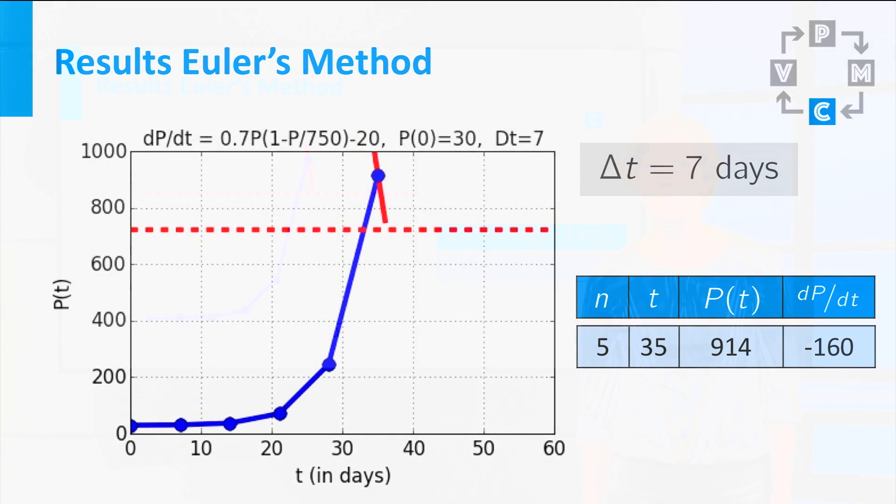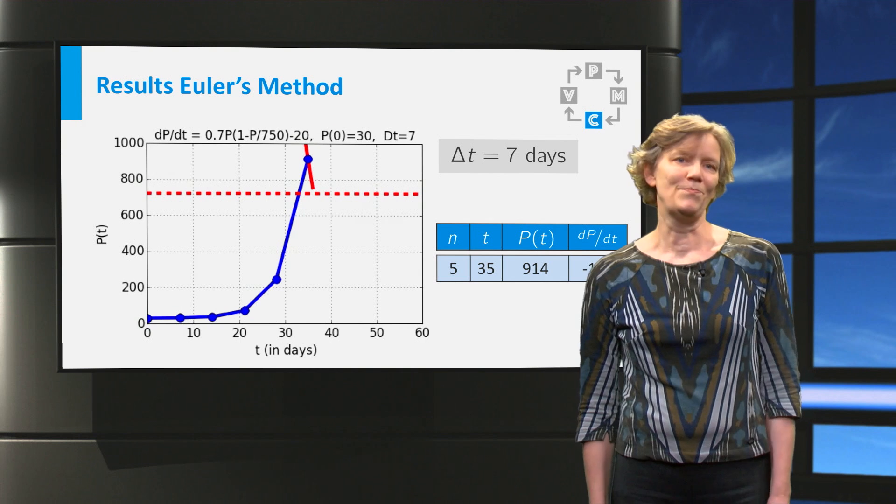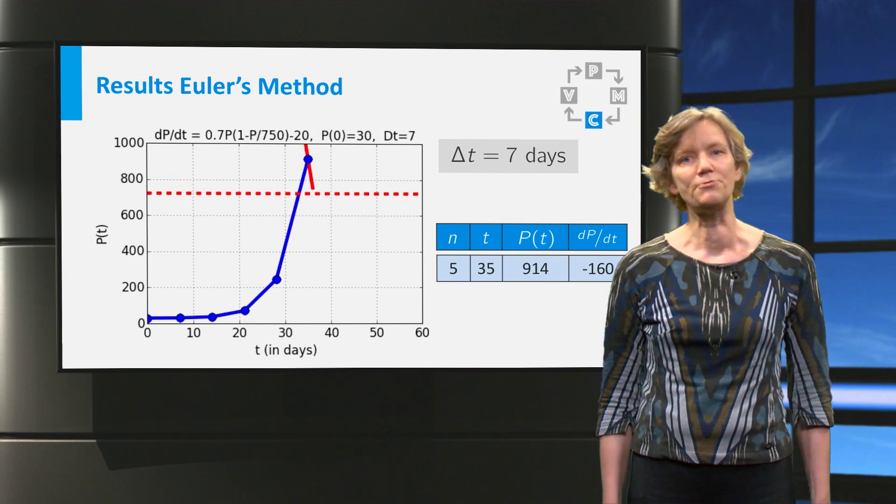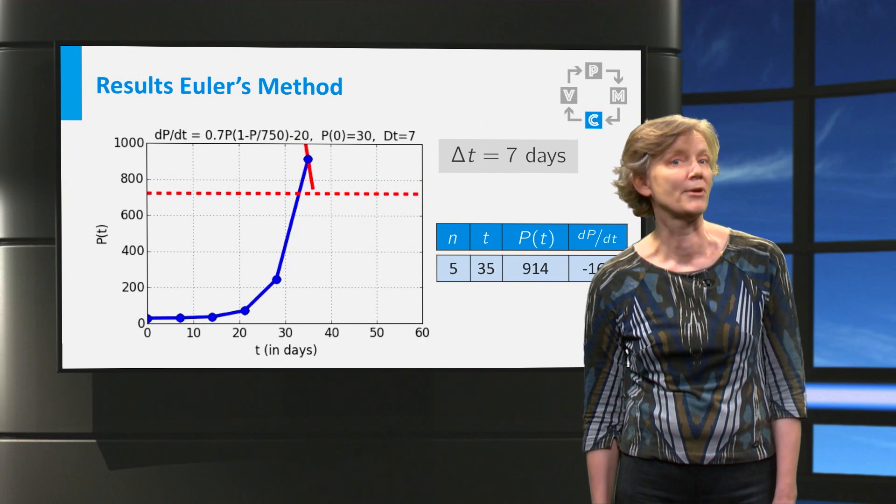The equilibrium is stable. So when P is larger, the derivative is negative. P should return to its equilibrium value.